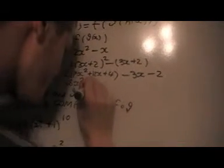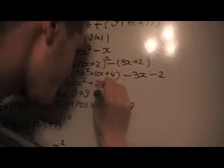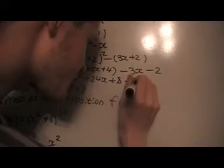18x squared, plus 24x, plus 8, minus 3x, minus 2. Now, we'll combine like terms we've got here.